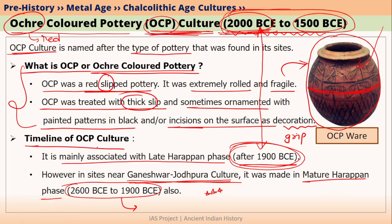The timeline of Ochre Coloured Pottery mainly matched with the Late Harappan phase — that is, it started after 2000 BCE mostly. But in certain cases, like in the OCP sites located close to Ganeshwar Jodhpura culture, we have found this pottery even during the mature Harappan phase.